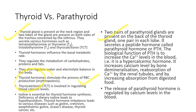Next is the parathyroid gland — four glands present in pairs, located at the back of the thyroid gland. PTH is also known as the hypercalcemic hormone because it increases calcium levels in the blood. It also promotes reabsorption of calcium by the renal tubules inside the kidney, and increases calcium absorption from digested food. The release of parathyroid hormone is regulated by calcium levels in the blood.